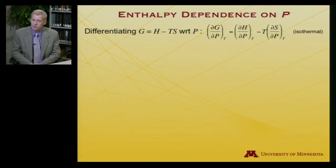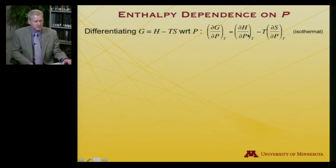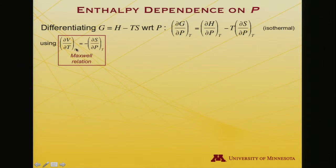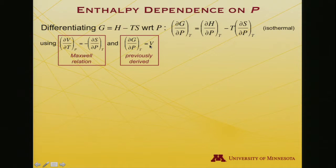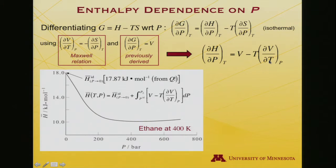Now, what about the enthalpy dependence on pressure? When we worked with Helmholtz free energy, we had a convenient way to measure internal energy. With Gibbs free energy, we have a way to measure the enthalpy. If I differentiate G — which is H minus TS — with respect to pressure, I get ∂G/∂P equal to the pressure dependence of the enthalpy minus T times ∂S/∂P. I'll use the Maxwell relation to eliminate the entropy term, and since I already know that ∂G/∂P equals volume, I can rearrange to find that the pressure dependence of the enthalpy equals V minus T times ∂V/∂T.